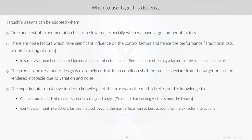Now in the set of beliefs in Taguchi's designs, a few can be seen as limitations of the approach, and as a practitioner it is important to be aware of those limitations. Number one: this method doesn't believe in randomization. The concept of a lurking variable — an unknown variable that may impact the response — is handled by randomizing the experiment in the traditional method. Taguchi feels that users must be expert in their processes and all such lurking variables must be known beforehand.